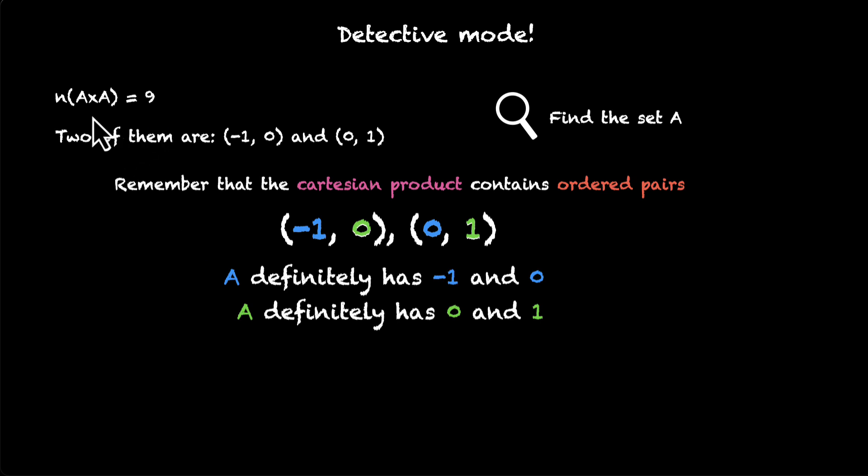The first clue was A times A, the Cartesian product has 9 elements. That's going to be 3 times 3, which means A has only three elements. And these are its three elements, minus 1, 0 and 1. So A has three elements, they are 0, 1 and minus 1. Which means we have actually solved the puzzle with just these two clues. We have figured out what A is. So the set A is minus 1, 0 and 1.